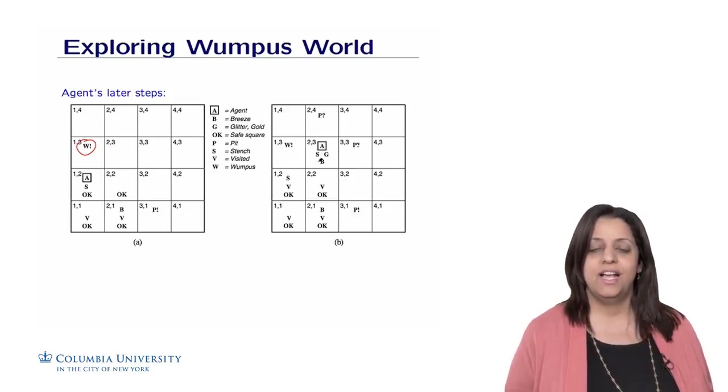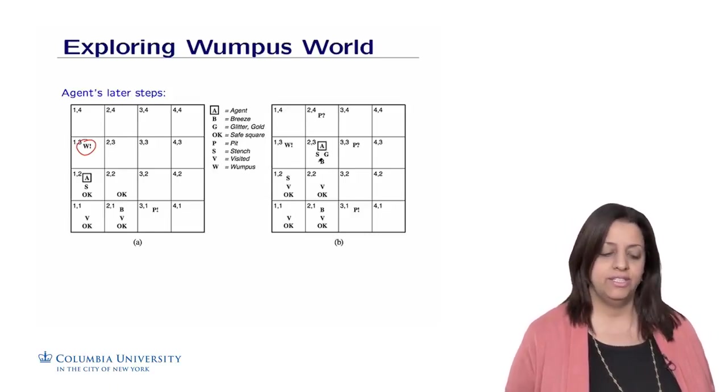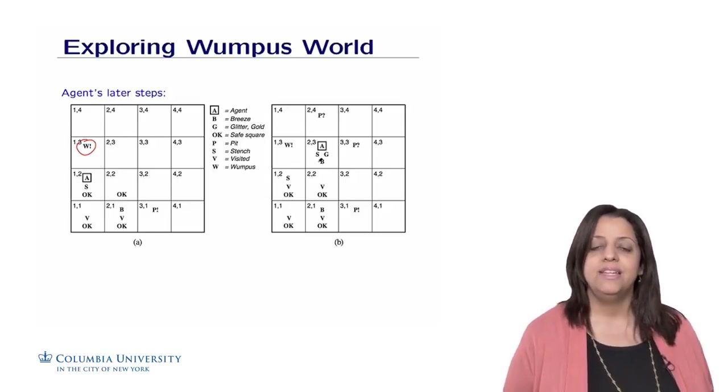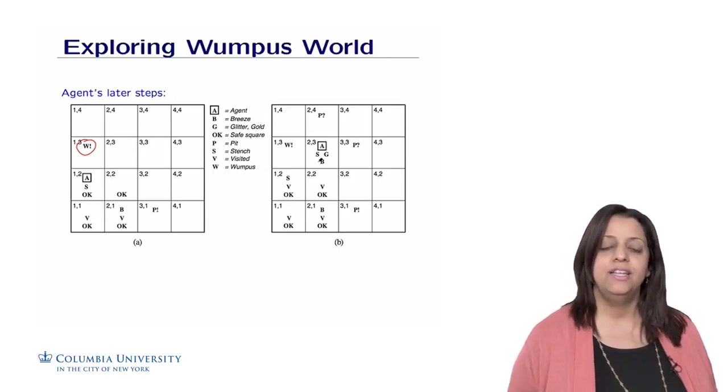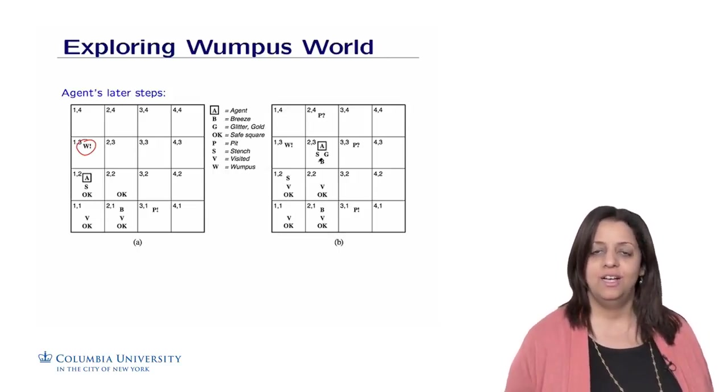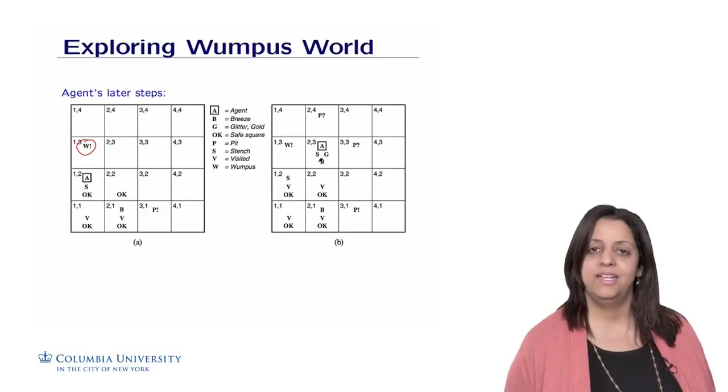So in the rest of this lecture, we'll study how to build logical agents, such as the Wumpus, that can represent information and draw conclusions to make the agent progress in its environment.